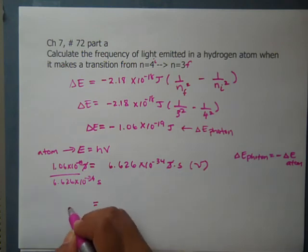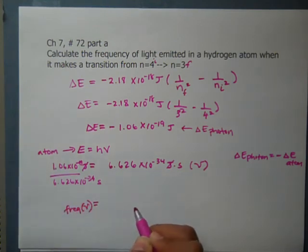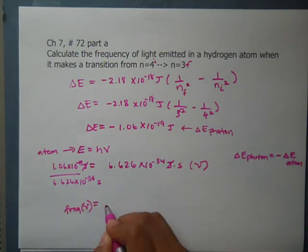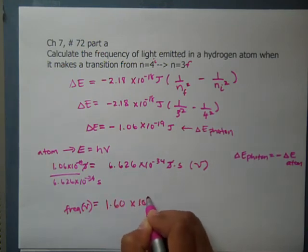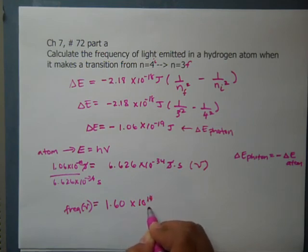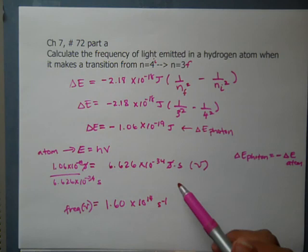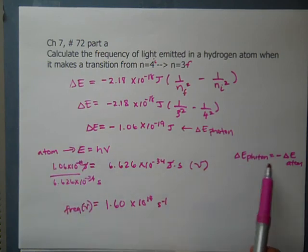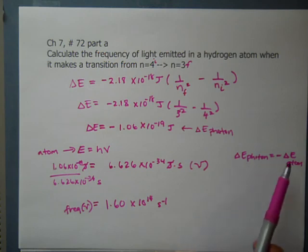Our frequency equals roughly 1.6 times 10 to the 14th per second. You can double check because frequency is always going to be per second. Remember this relationship between the photon and the atom.